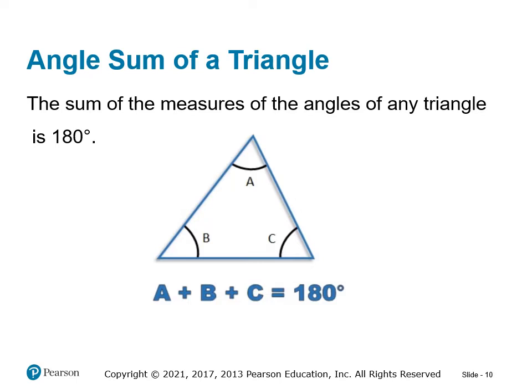This is just an interesting fact, not something you need for this class — it's called non-Euclidean geometry. Triangles superimposed on the face of a sphere can have angle sums as small as zero if the angles are concave, or as high as 540 degrees if they're all convex.